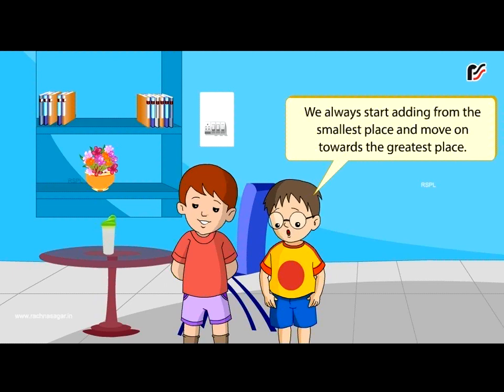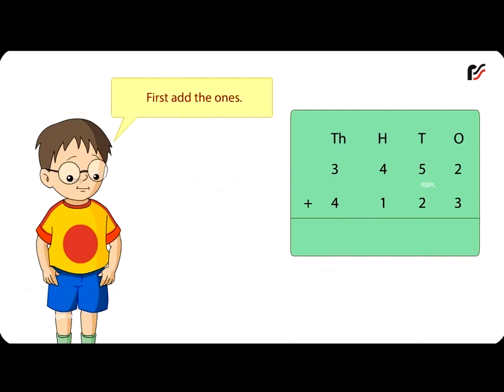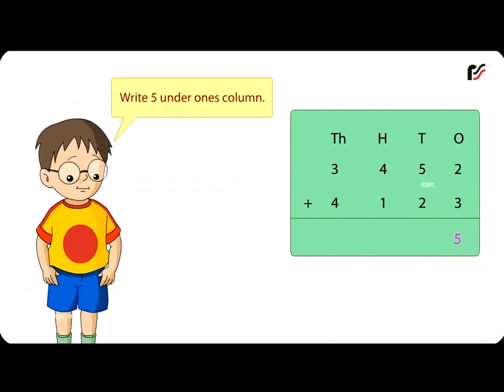We always start adding from the smallest place and move on towards the greatest place. For example, to add 3,452 and 4,123. First add 1's. 2 plus 3 is equal to 5 1's. Write 5 under 1's column.